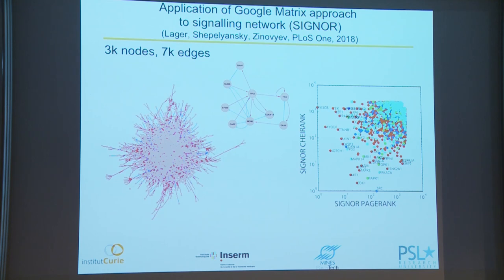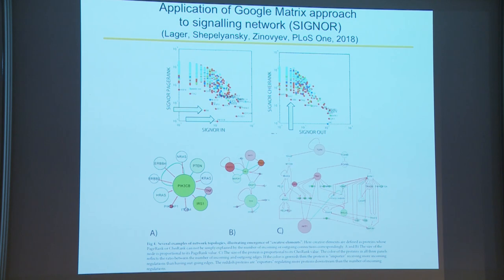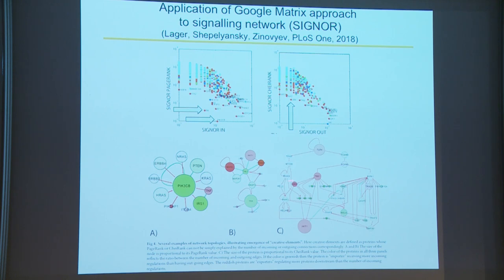In biological networks, nodes that are very influential — having many outgoing edges — are usually not the same as those that are tightly regulated and receive many incoming regulations. PageRank value is proportional to incoming connectivity of a node, but we see important deviations from this proportionality law. It was interesting to understand what patterns in the network lead to deviations from this proportionality rule — why despite low incoming connectivity, a node receives a very high PageRank.